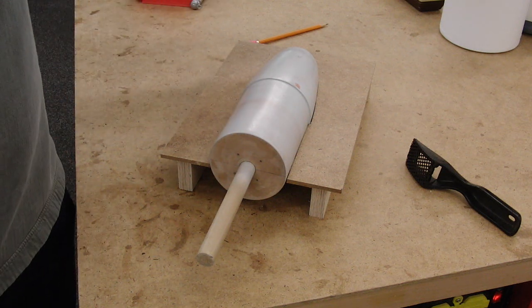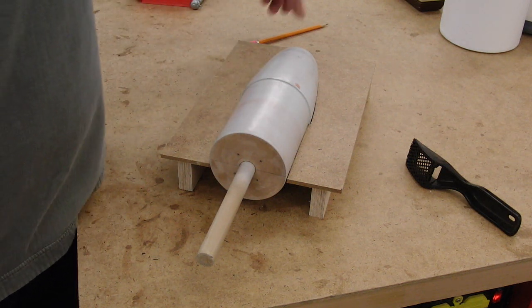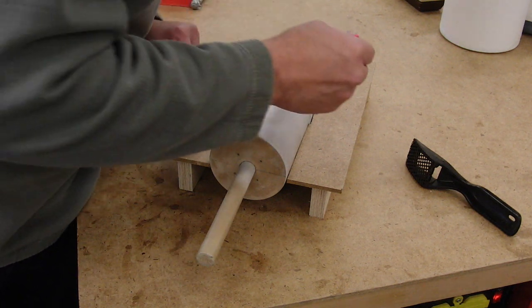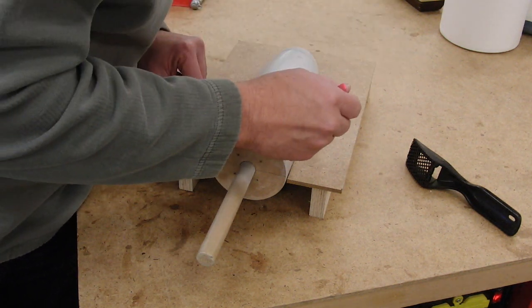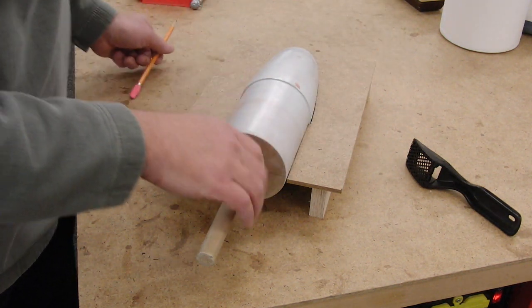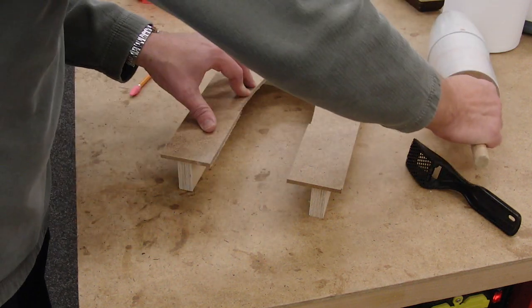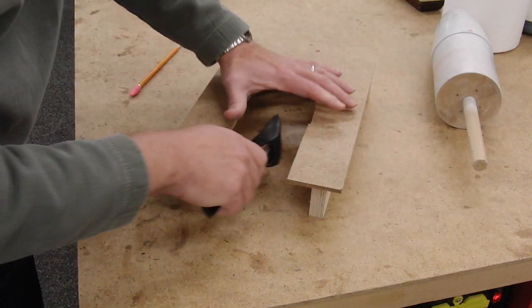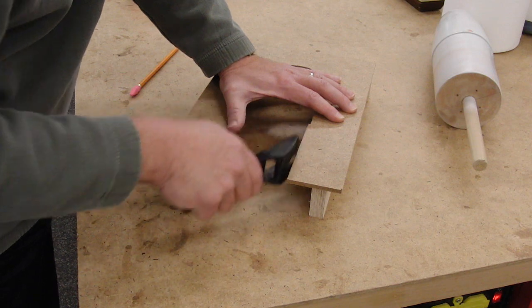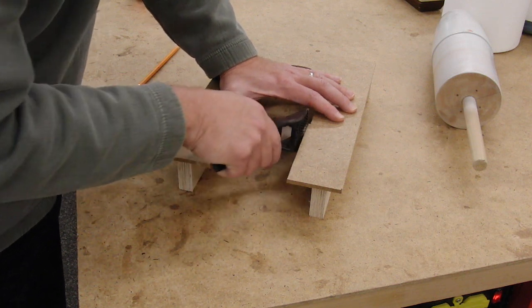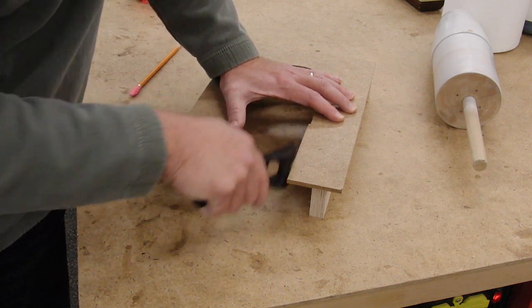So, we deliberately cut this slightly undersized. You can go in and find the tight spots, mark them with a pencil. Then, use your SureForm plane or any other equivalent tool to adjust.